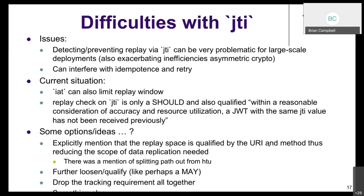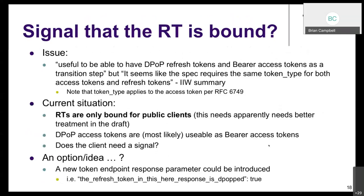Options to address the JTI concern include: further noting that the replay scope is qualified by URI and method, reducing the data replication scope; possibly splitting the path from the htu claim; further loosening the requirement to a MAY or non-normative text; or dropping the JTI requirement altogether. Some other undefined approach could also be brainstormed.